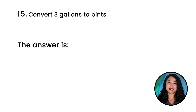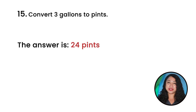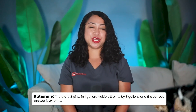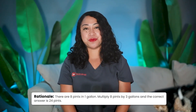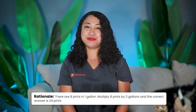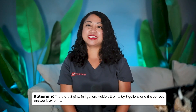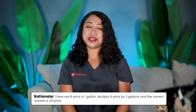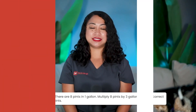Question 15: Convert 3 gallons to pints. The correct answer is 24 pints. Rationale: there are 8 pints in 1 gallon. Multiply 8 pints by 3 gallons to get 24 pints.